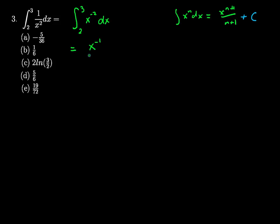And I need to evaluate this as x goes from 2 to 3. So I can reduce this down a little bit. X to the negative first divided by negative 1 will just be negative 1 over x.